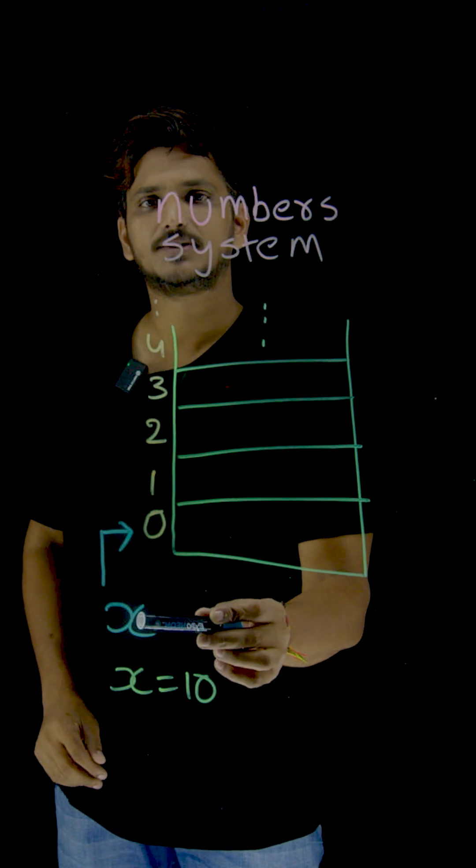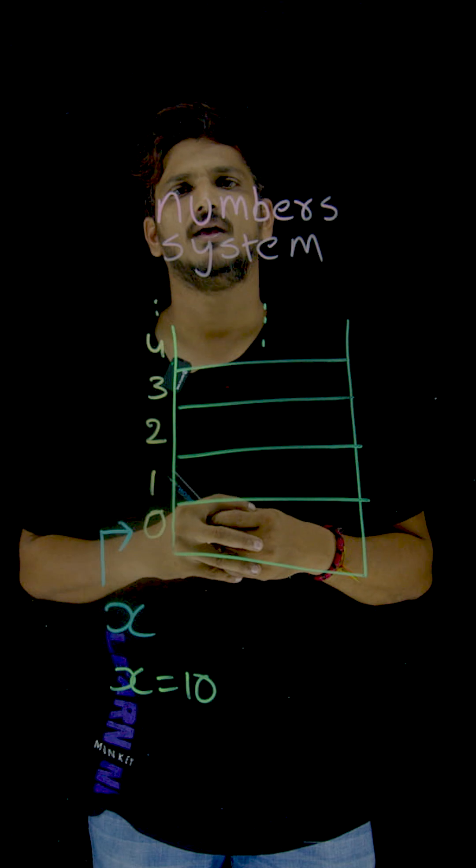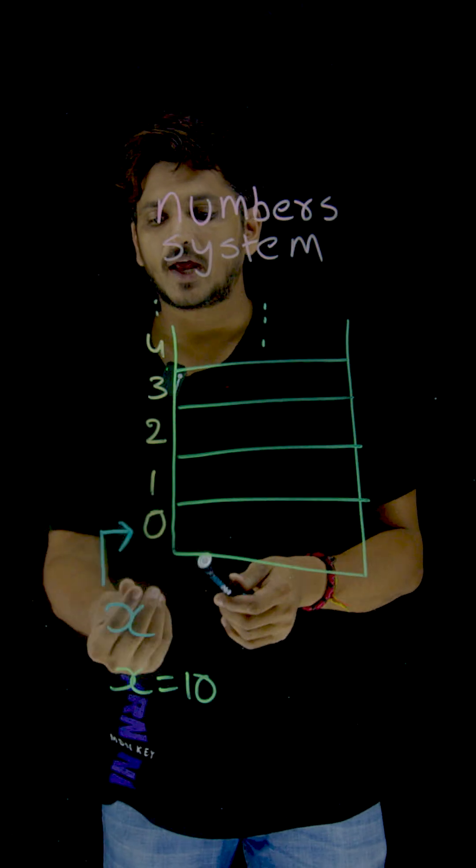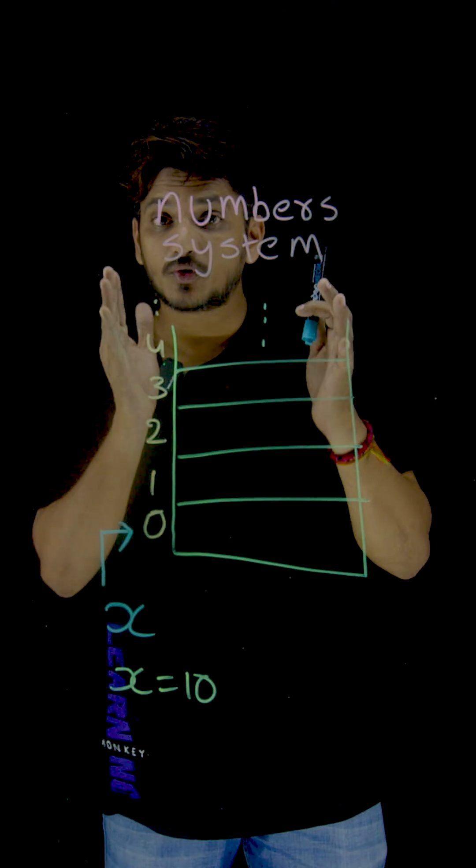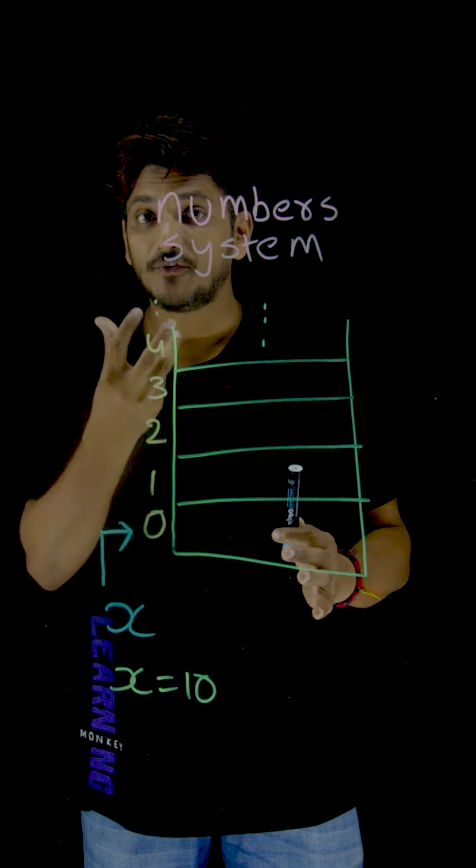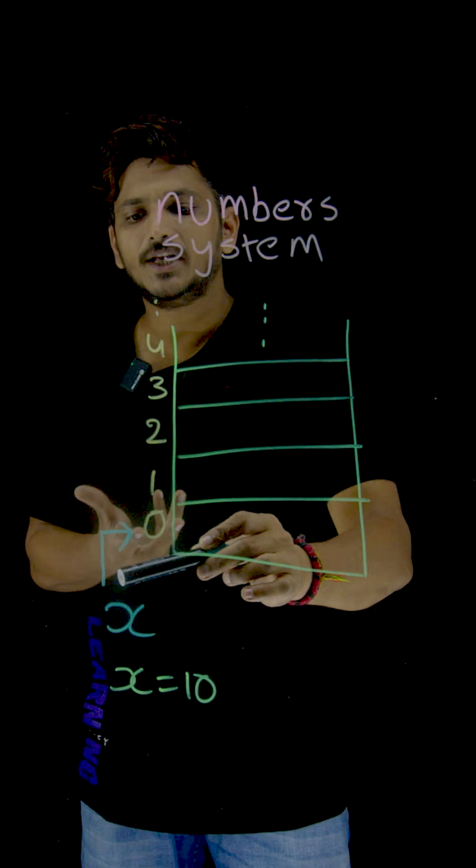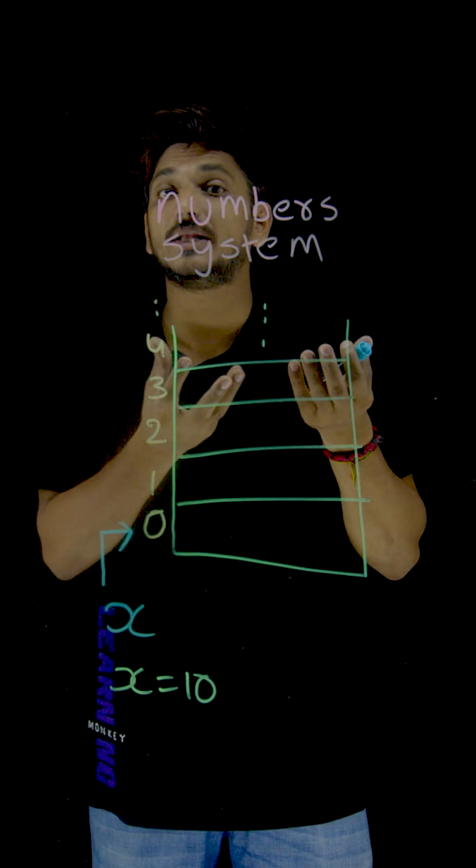Example, X is a variable. Whenever you write X in your programming language, it is a variable.